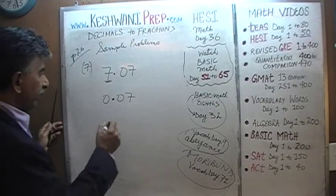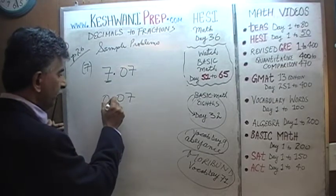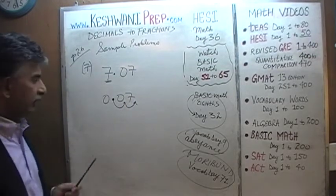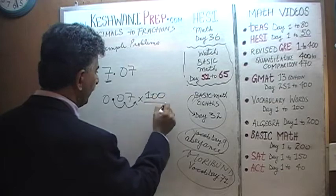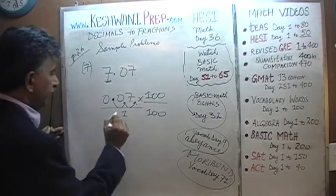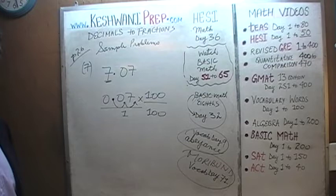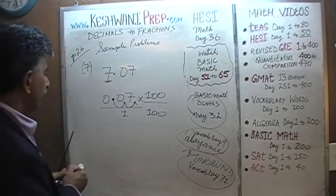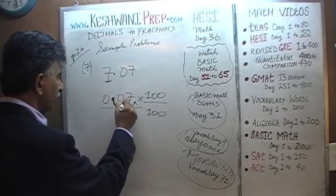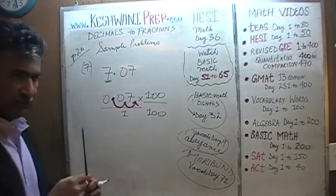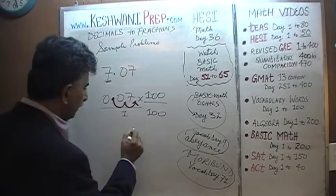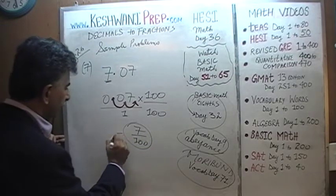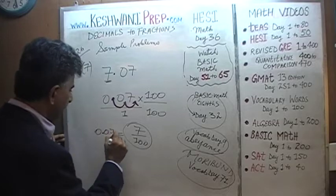In order to make 0.07 a whole number, we need to move the decimal two spots — one and two. We need to multiply the top and the bottom by 100. If you're going to multiply the top by 100, we must multiply the bottom by 100. So 0.07 times 100: we take the decimal and move it two places, and it becomes 7. So we end up with 7 over 100. In other words, 0.07 is just 7 over 100.